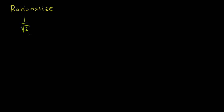So with that said, let's learn how to rationalize it. The simple way, if you just have a simple irrational number in the denominator, you can just multiply the numerator and the denominator by that irrational number over that irrational number. This is clearly just 1 — anything over that same thing is going to be 1, so we're not fundamentally changing the number, we're just changing how we represent it. The numerator is going to be 1 times the square root of 2, which is the square root of 2. The denominator is going to be the square root of 2 times the square root of 2.